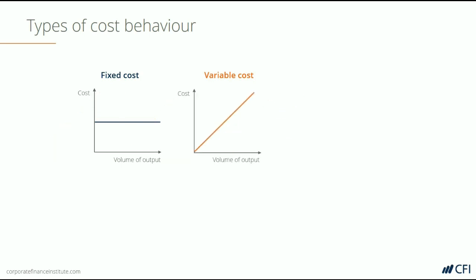Then there are variable costs. As you can see in this chart, the cost is a linear line and it increases as volume increases with a consistent ratio. Now we'll get into this later — the line may not always be straight, it may not always be a linear relationship, but let's assume that in the simplest terms it is.